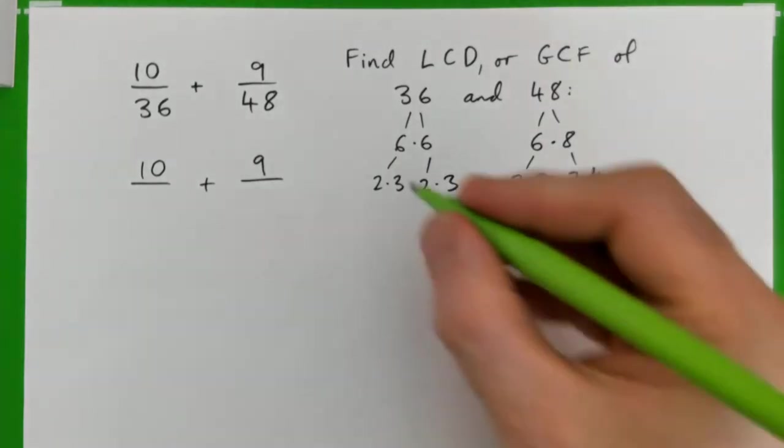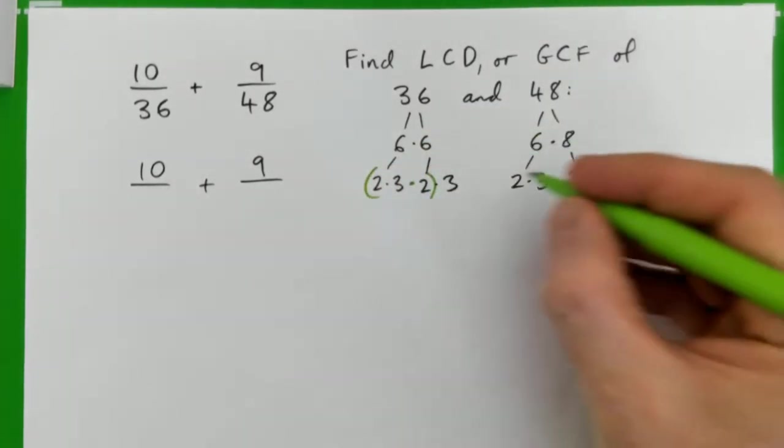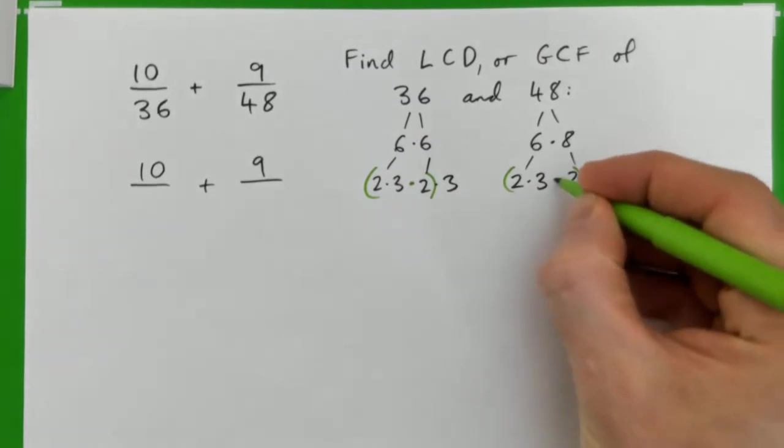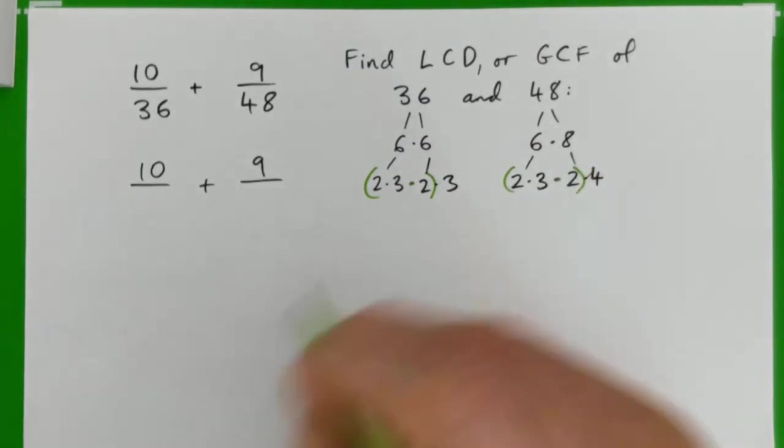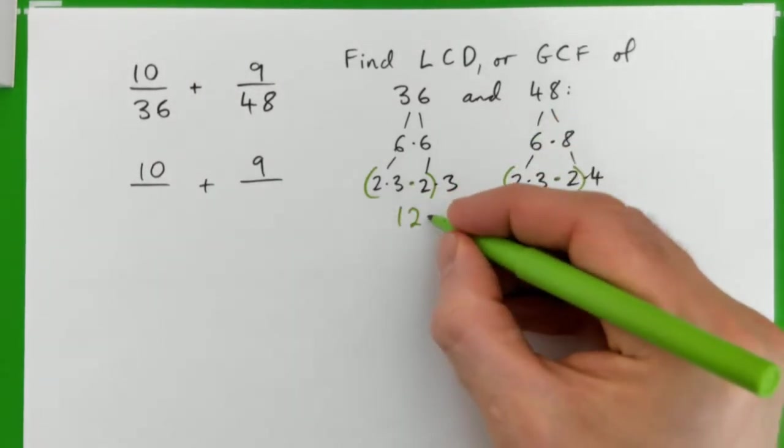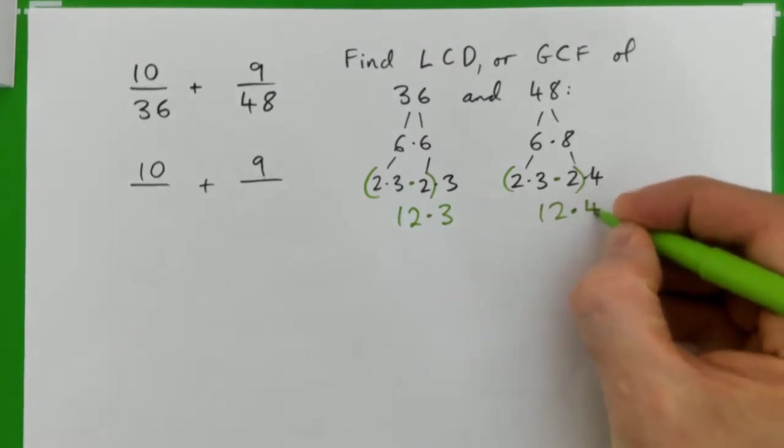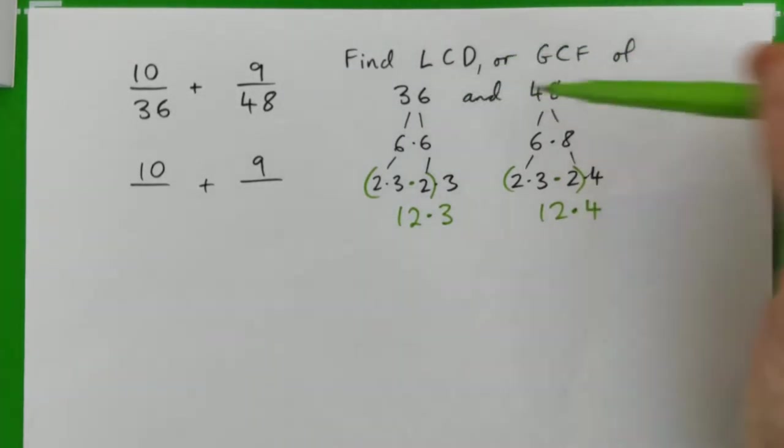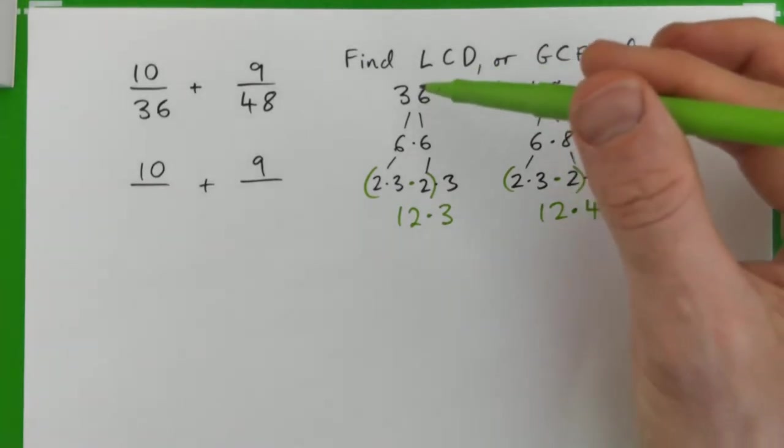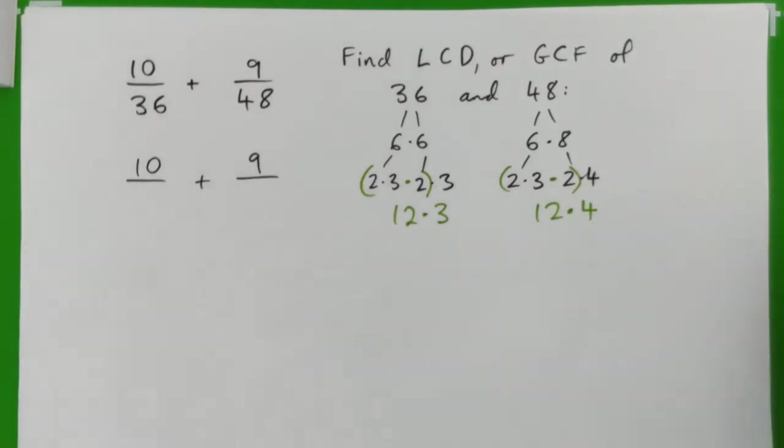So in each we have a 2 times 3 times 2. See that? 2 times 3 times 2. Now 2 times 3 times 2, that's 6 times 2 is 12. So we have 12 times 3 here and 12 times 4 here. Now you could have just seen that and known your times table and see, okay, 12 is the largest number that goes into both 36 and 48.